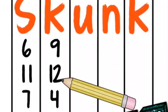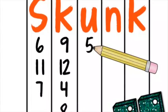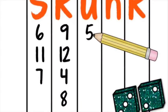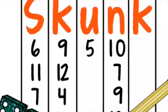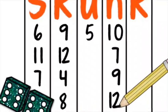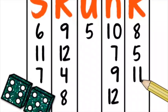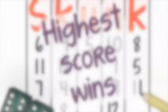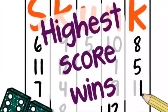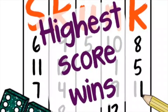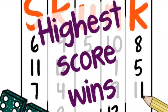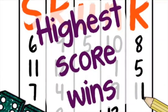Continue to play rounds two through five following these same rules. While in theory a round could go on forever, most will take between one and twenty rolls. When all five rounds have been played, scores are added up and the highest score wins.